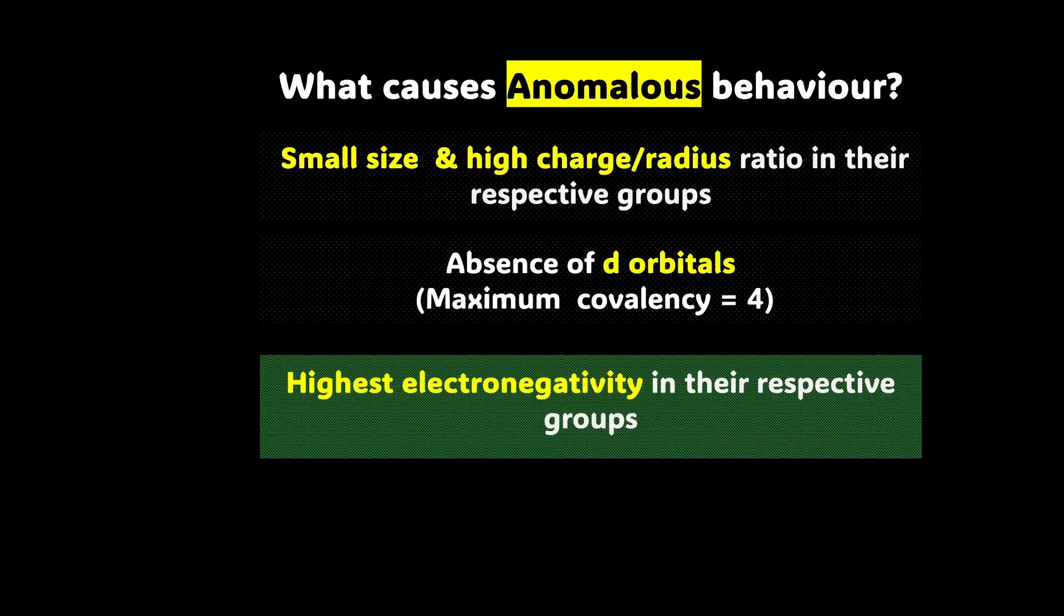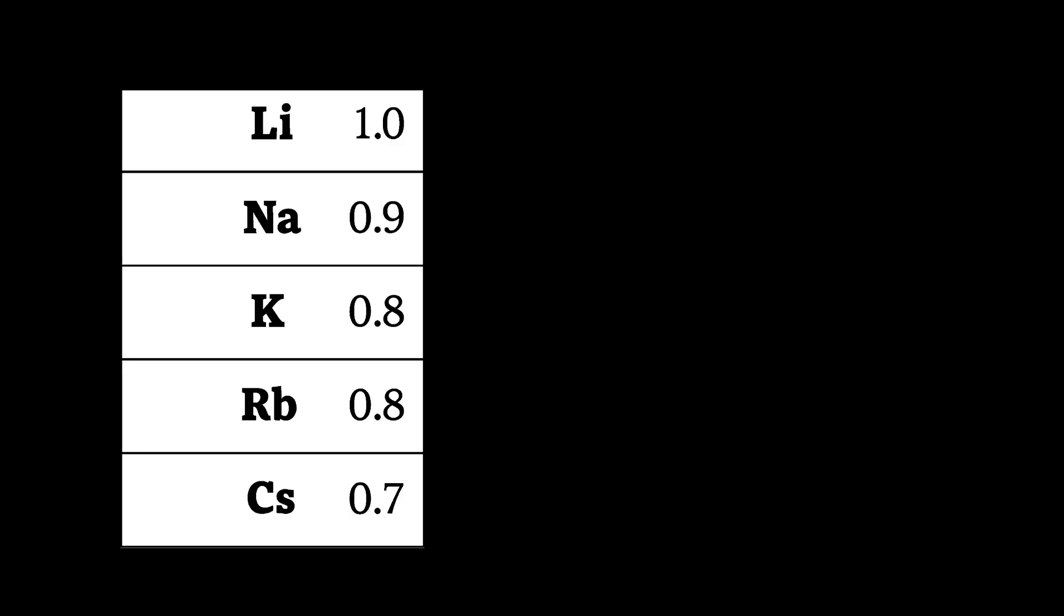And last but not the least, there is another reason which is when we talk about the electronegativity, these second period elements have the highest electronegativity in their respective groups. Let's check it with group 1 itself. You can see that lithium, which is the first member of group 1, has the highest electronegativity. The same is true for all the second period elements. They have the highest electronegativity and that is what sets them apart from the rest, which is one of the reasons of the anomalous behaviour.